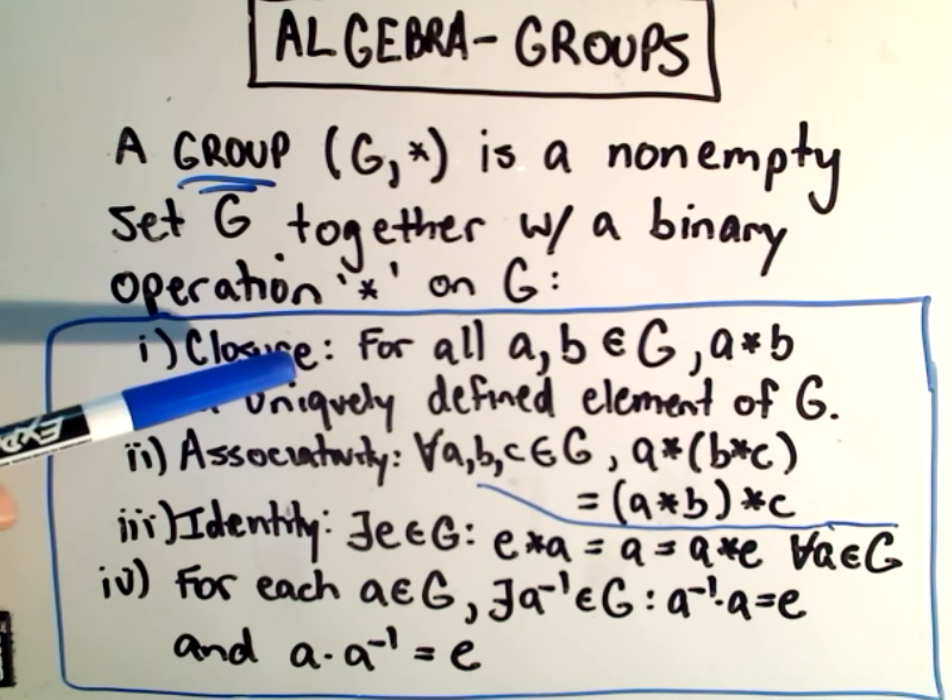such that we have the following four criteria. First is closure. If you take any two elements in the group and you apply this operation, you get a unique element still in the group.